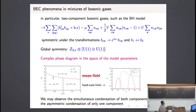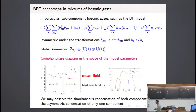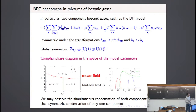That's a simple extension. Now we want to understand what kind of Bose-Einstein condensation patterns we have. This is the same framework as before. Let me first consider the symmetry: we have a U(1) symmetry for each field b, but we also have an exchange symmetry. So I would write down the global group in this way — to give an idea.